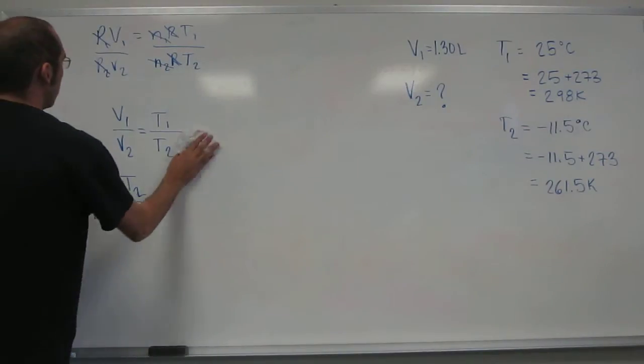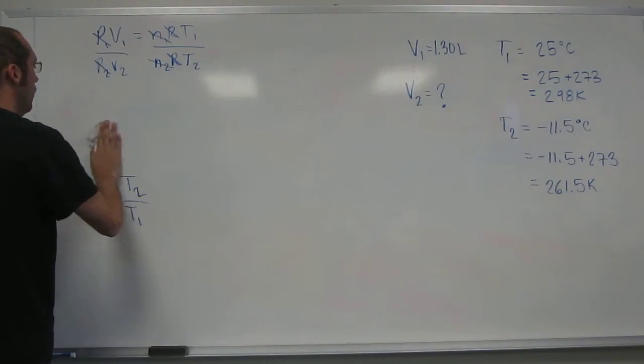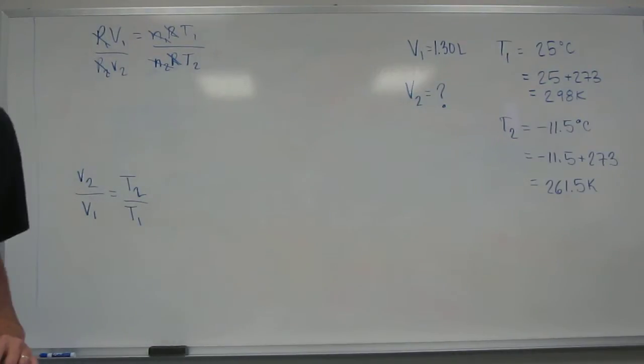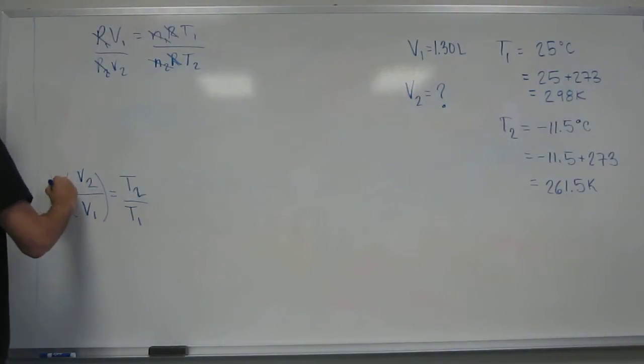So we're going to turn this into a different equation. V2 over V1 equals T2 over T1. Like that. Is that cool? Mm-hmm. So let's just erase up here for a second. And remember, we have to isolate. The reason we did that, why did we do that? Because we're trying to isolate the variable V2. Right? Okay. Okay? So we need that by itself.